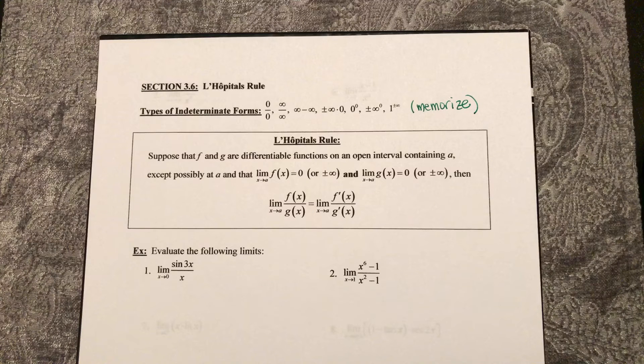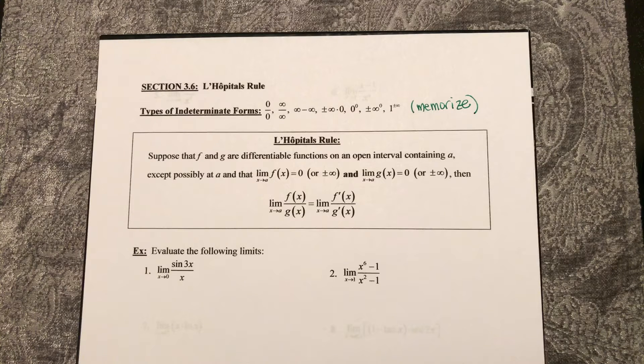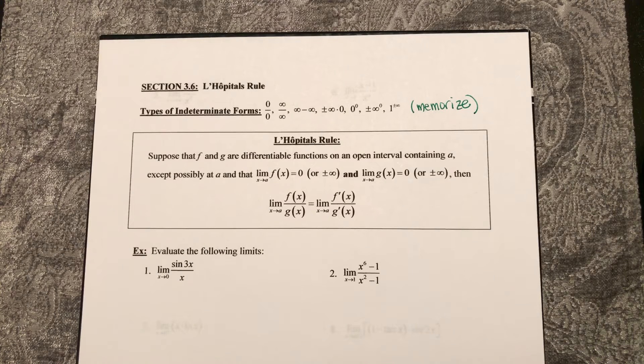infinity over infinity, infinity minus infinity, infinity multiplied by 0, 0 to the 0, infinity to the 0, and 1 to the infinity.